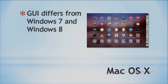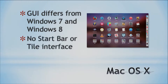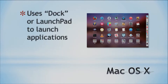The GUI does differ in Mac OS X from Windows 7 and Windows 8. It doesn't have a start bar or the tile interface that Windows 8 has. Instead it has what we call a dock — you can see this on the right side of the image — which works like your start bar in OS X where you can click icons to launch applications. Another feature is called Launchpad, which you can use to organize and launch applications as well. It is a little different but it's actually a pretty easy interface to get accustomed to.